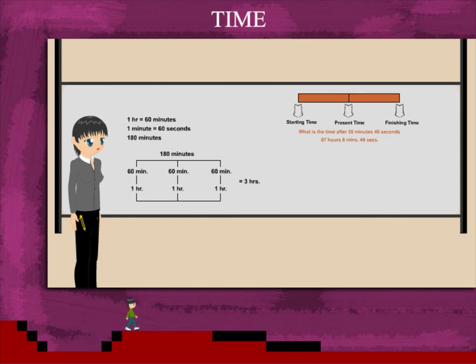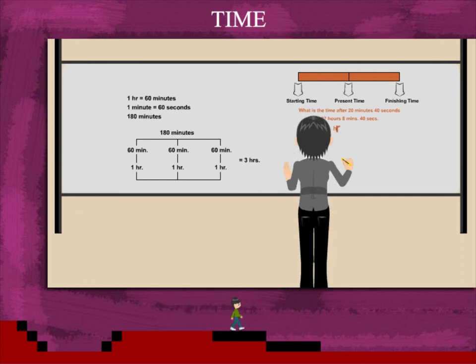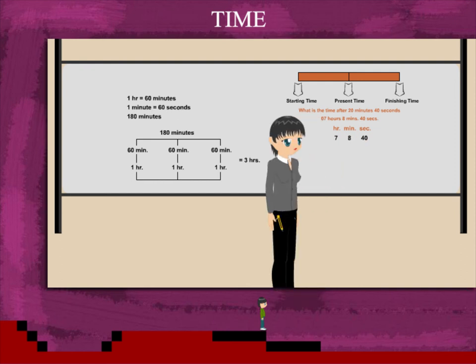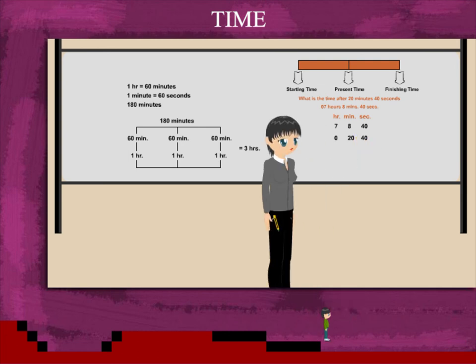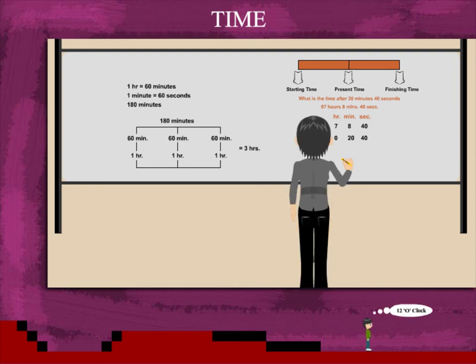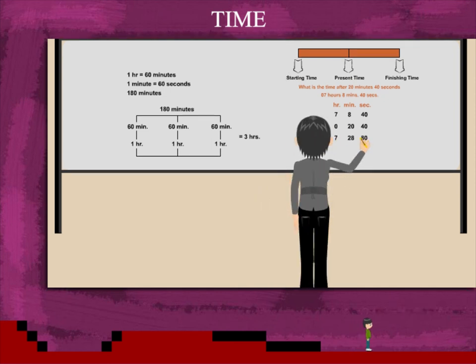So she adds 20 minutes and 40 seconds to 7 hours 8 minutes 40 seconds. Adding the seconds gives 80. Since 60 seconds make a minute, she writes 20 seconds.